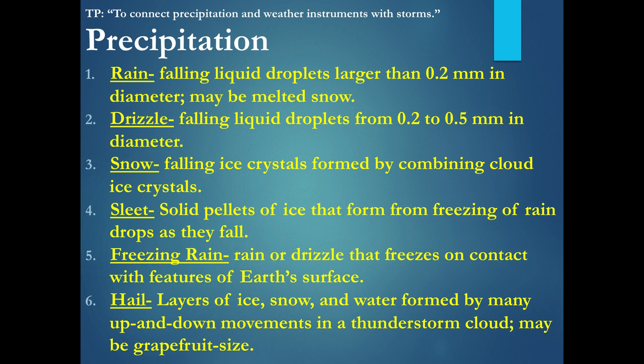Snow occurs when the temperature is below 32 degrees Fahrenheit or 0 degrees Celsius. Sleet is a transition in temperature. Freezing rain is when it falls as rain and freezes upon contact with the Earth's surface, where temperatures are below 32 degrees Fahrenheit or 0 degrees Celsius. Hail occurs with the cumulonimbus cloud, the thickest cloud of them all, and there can be some variation in temperature within the cloud.